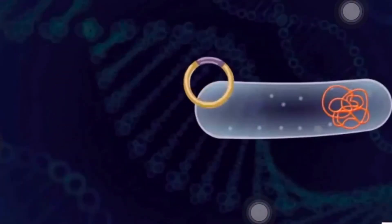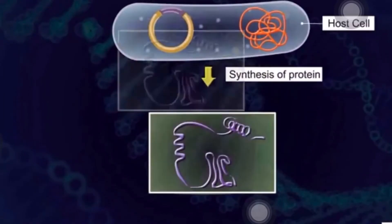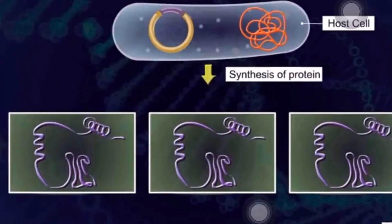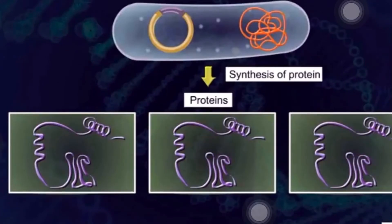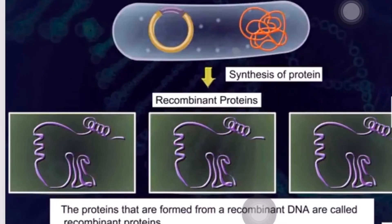Once the gene is inserted into the host cell, it starts expressing itself in the host cell. That is, it is synthesizing the desired protein. Such proteins that are formed from recombinant DNA are called recombinant proteins. This protein has to be produced in large quantities.